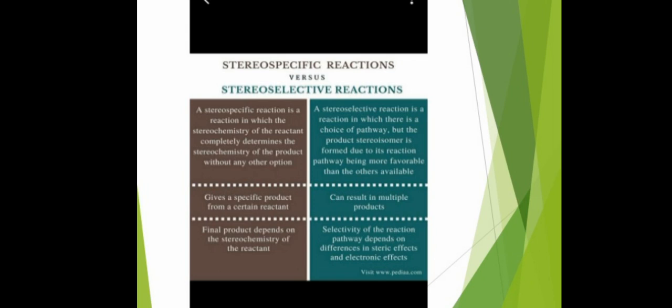A stereoselective reaction is a reaction in which there is a choice of pathway, but one product stereoisomer is formed preferentially because its reaction pathway is more favorable than the others available. This can result in multiple products. The selectivity of the reaction pathway depends on the difference in steric effects and electronic effects.